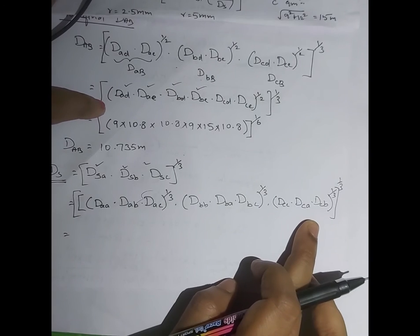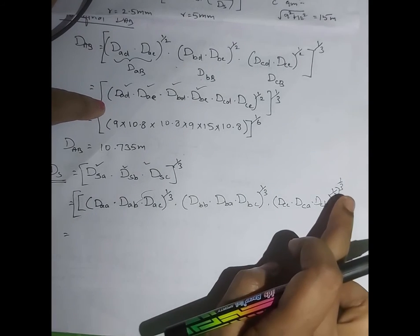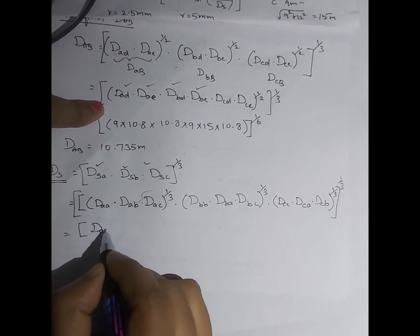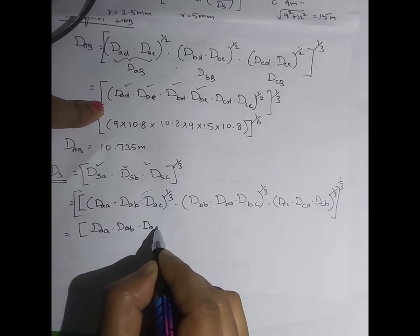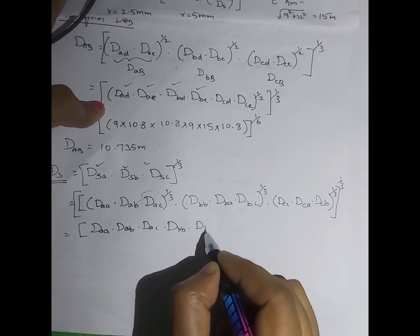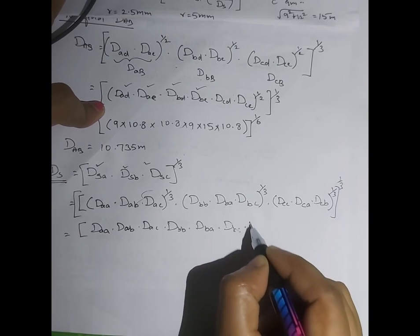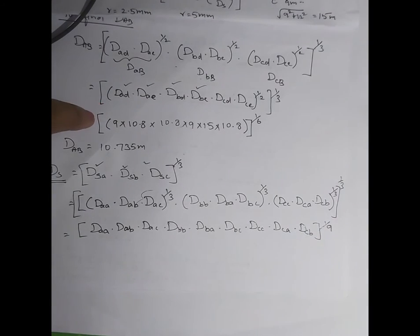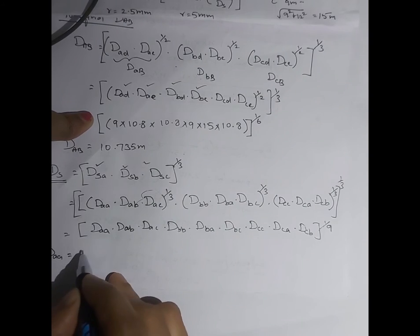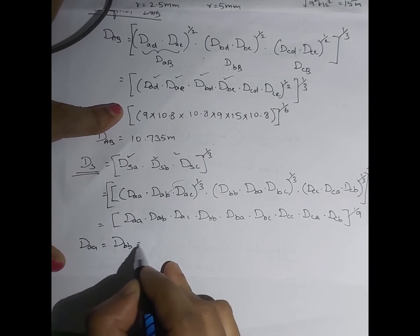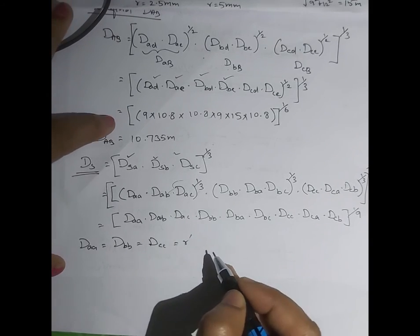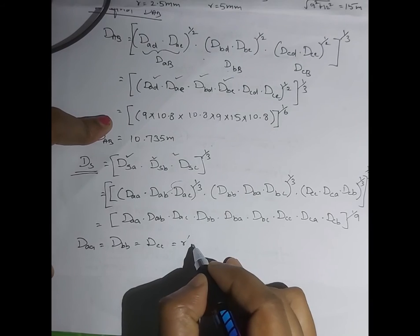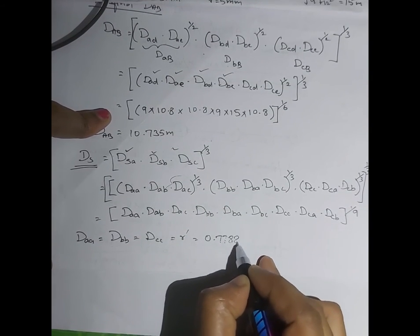Taking all powers common, 1/3 × 1/3 = 1/9. So the full expression is: (Daa · Dab · Dac · Dbb · Dba · Dcc · Dca · Dcb)^(1/9). We know Daa = Dbb = Dcc = r' (self GMR), which equals 0.7788r. For phase A, r = 2.5 mm.